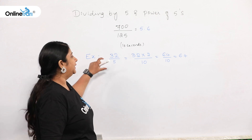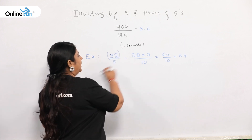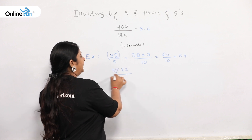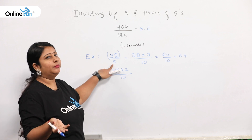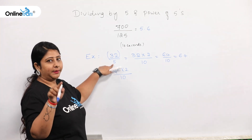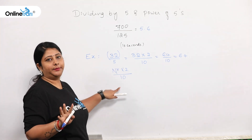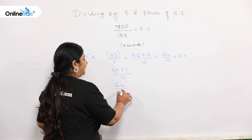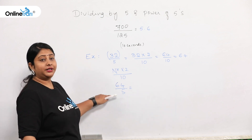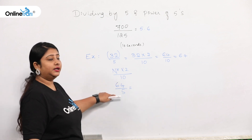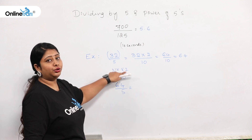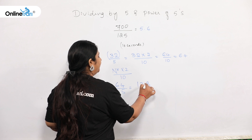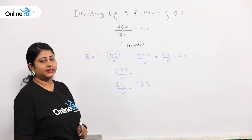So this is the technique. In shorter words: always multiply the numerator by 2 and divide by 10 if you are dividing any number by 5. Let me take one more example: 64 divided by 5. Multiply the numerator by 2 and divide by 10 — 64 × 2 = 128, divided by 10 is 12.8. That's it.